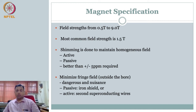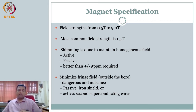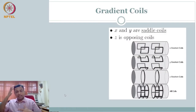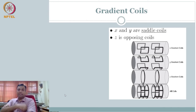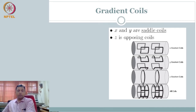The next important component is your gradients. You have the permanent magnet B-naught. Gradients are important — where did we see them in the block diagram? Gradients are needed for the purpose of changing the magnetic field in X, Y, and Z directions. This is done using gradient coils. You have three different directions, therefore you have X gradient coils, Y gradient coils, Z gradient coils, and all of them can be nicely assembled together.